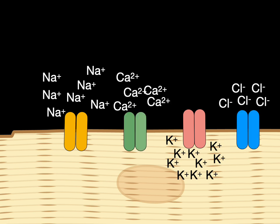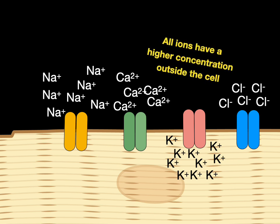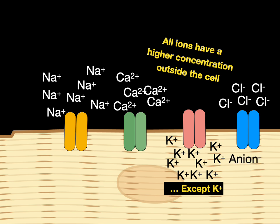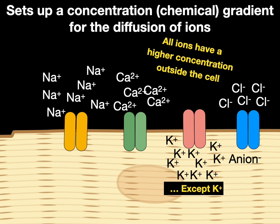We notice that there's lots of calcium on the outside of cells, and lots of chloride and bicarbonate. As a matter of fact, all ions have a higher concentration outside the cell except for potassium, where there's a lot of potassium inside the cell, and potassium ions are always bound to a negatively charged anion. This sets up a concentration gradient or a chemical gradient for the diffusion of ions, where sodium wants to diffuse down its gradient.